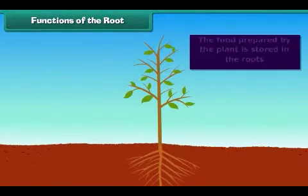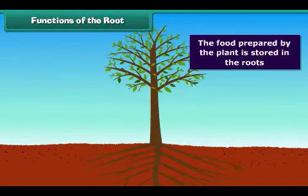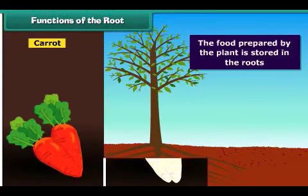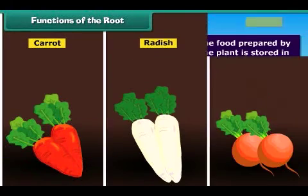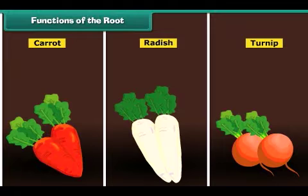Roots also perform the function of storage of food in some plants, such as carrot, radish and turnip. The food prepared by the plant is stored in the roots. We eat these roots and get nutrition.